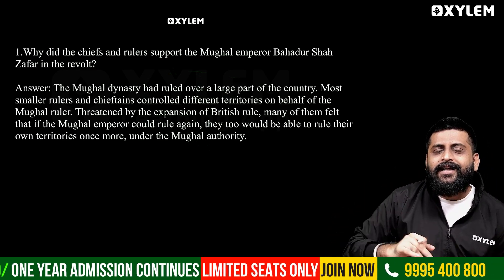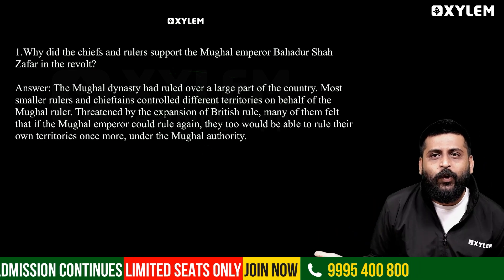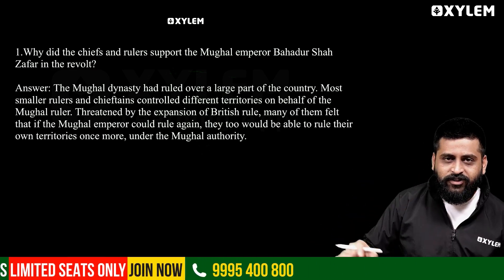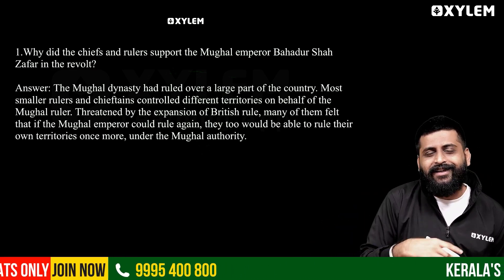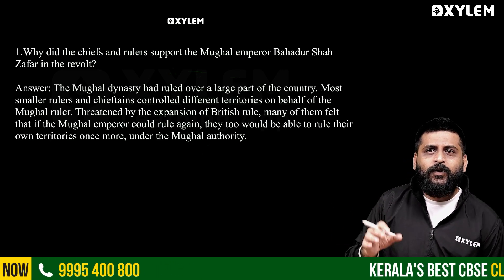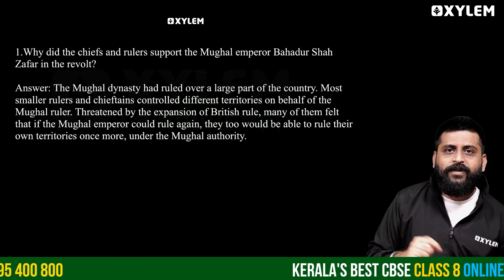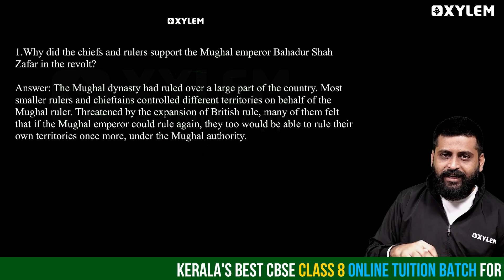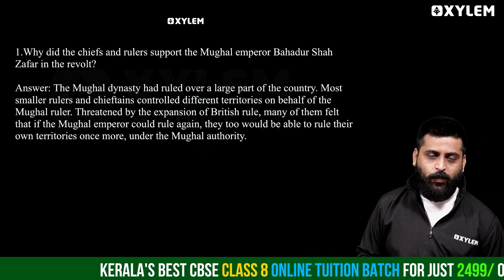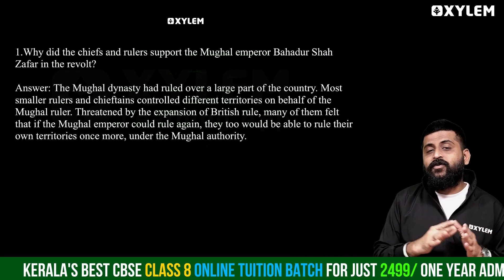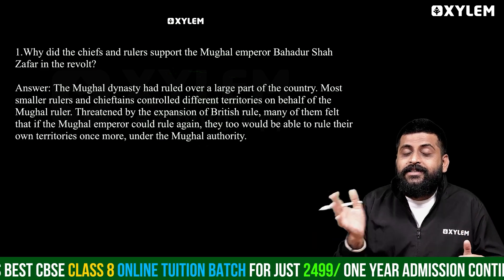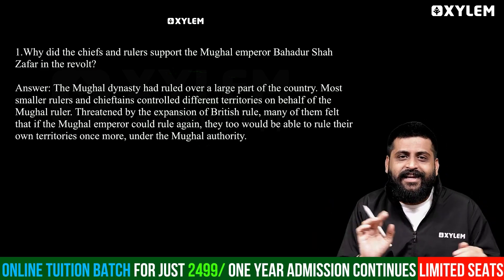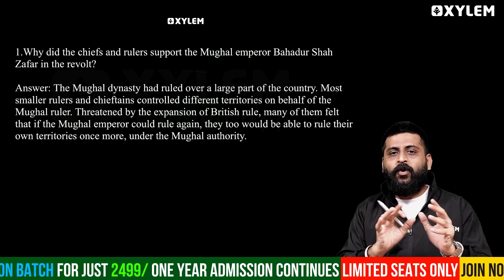But all of that was threatened. The British rule posed a significant problem. The most vulnerable rulers faced threats to their power and territories. The Mughal rulers were at the center of why the revolt was coming up.